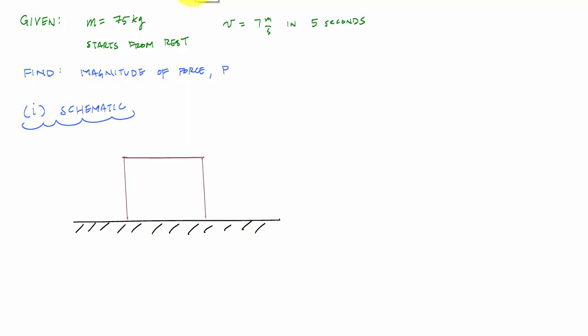There's a coefficient of friction, coefficient of kinetic friction. And the way that this thing is, there's like a rope or something here pulling at some angle. And the angle with respect to the horizontal is 25 degrees.